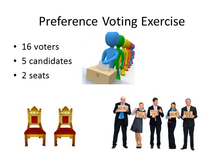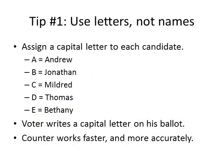Let's step it up a notch and pretend that 16 voters are choosing among five candidates to fill two seats. Here is the first tip: assign a capital letter to each candidate and instruct the voters to write these letters on their ballots instead of the names of the candidates. This makes counting faster and more accurate.